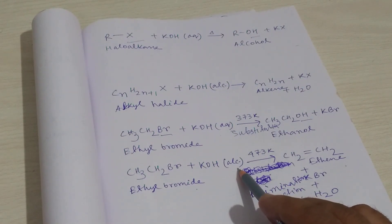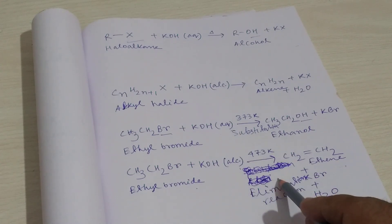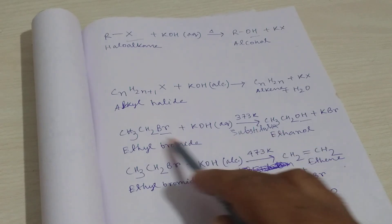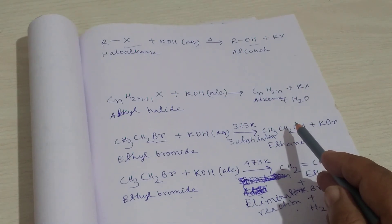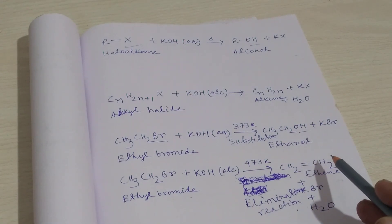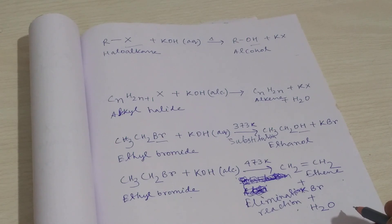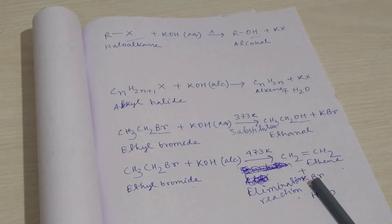When solvent polarity is low, it brings about elimination, and when solvent polarity is high, it favors substitution reaction. These are the general equations when alkyl halide reacts with aqueous potassium hydroxide and alcoholic potassium hydroxide. That is the difference between aqueous and alcoholic potassium hydroxide reactions with haloalkane. I think you understand this topic well.